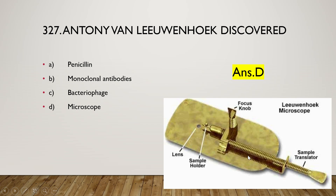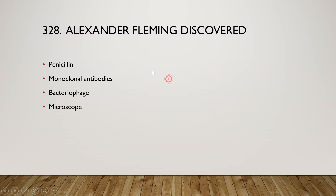Anthony van Leeuwenhoek discovered the first microscope. That is why he is known as the father of microbiology. Here is the sample translocator — to move the sample from right side or left side — and this is the focus knob, this is the sample holder, and here is the lens. The next question is: Alexander Fleming discovered penicillin, monoclonal antibodies, bacteriophage, or microscope?